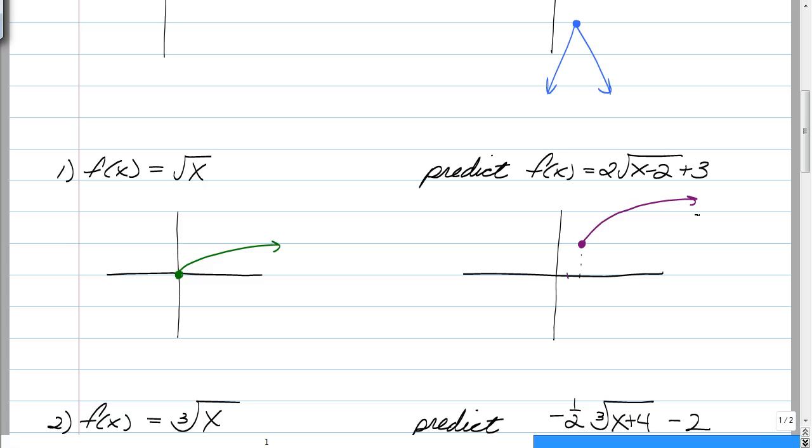It's the same principle. All you have to do is use the same type of thing that we did back with absolute value. So it's opposite of what's inside the radical, comma, outside. That's going to be your starting point. And now the 2 is just going to stretch it up and make it go up faster.